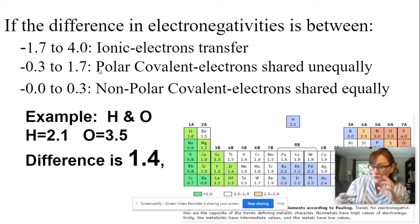One of the atoms pulls those electrons closer. So in this case, the oxygen is stronger. So the electrons that are being shared are going to be pulled a little bit more towards the oxygen. That changes the shape of the molecule a little bit because the electron cloud shifts. Those are called polar covalent bonds. The electrons are being shared, but unequally.